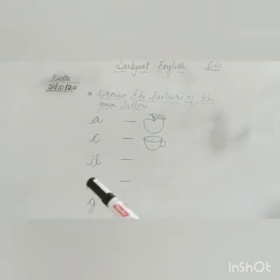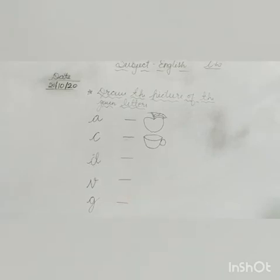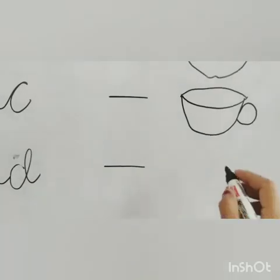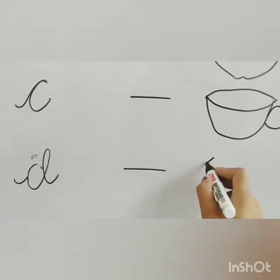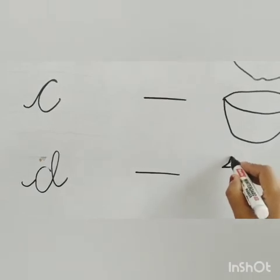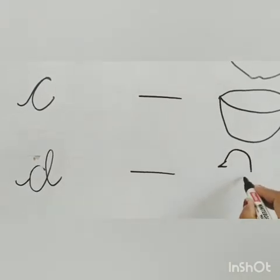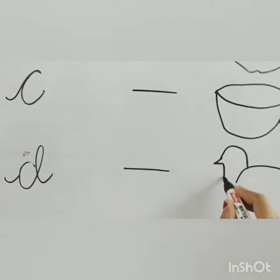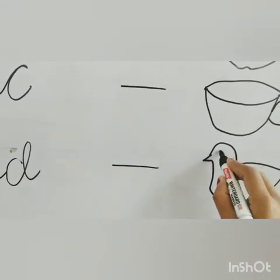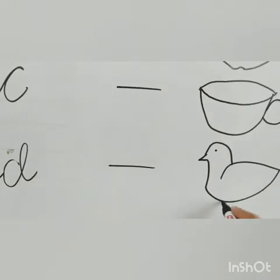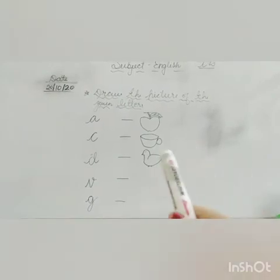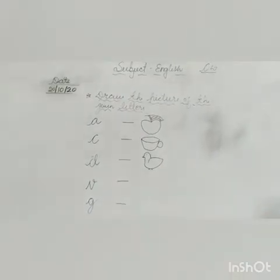Now the next letter D, D for duck. So let's make the duck. For making duck, you have to make first like this. Okay, now curve like this, and this. Okay, now here is the eyes of duck, and legs. Okay, this way you have to make duck. Okay.